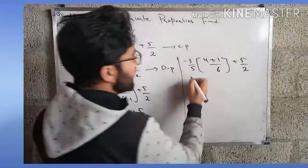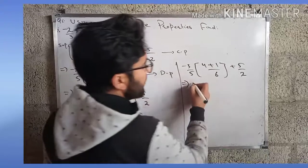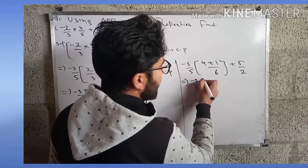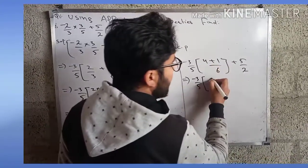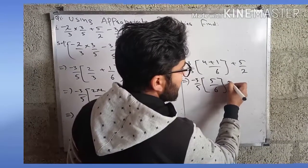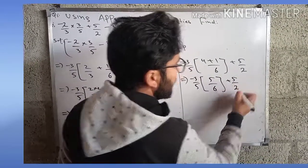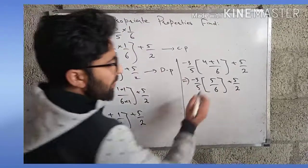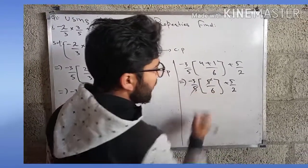It's a very easy question, just stay with me. -3/5, so 4 + 1 gives us 5/6 + 5/2. So here multiplying, 5 and 5 will be cancelled.